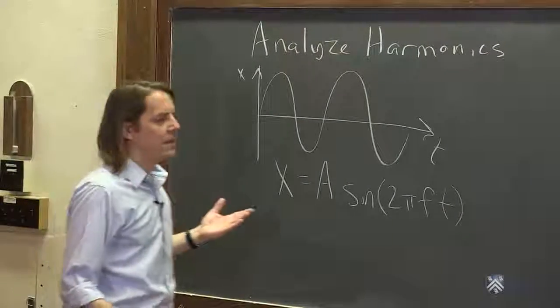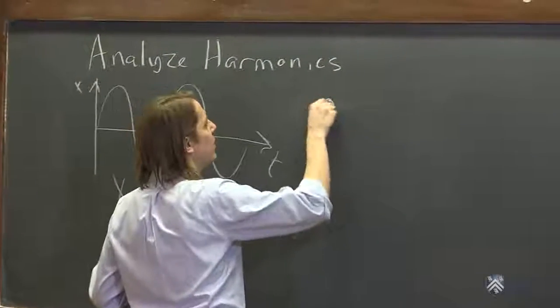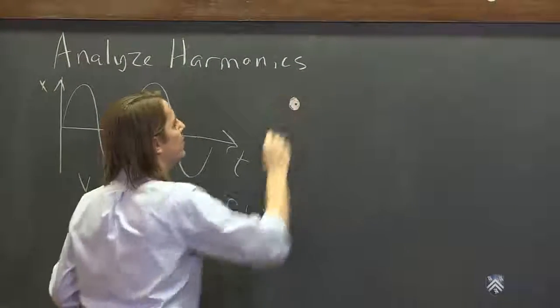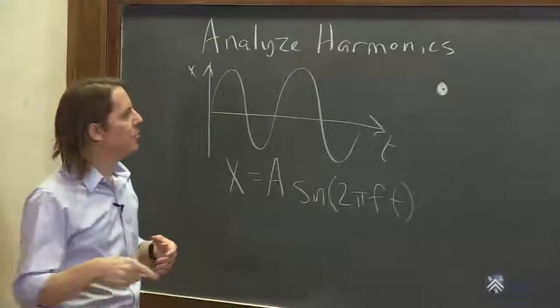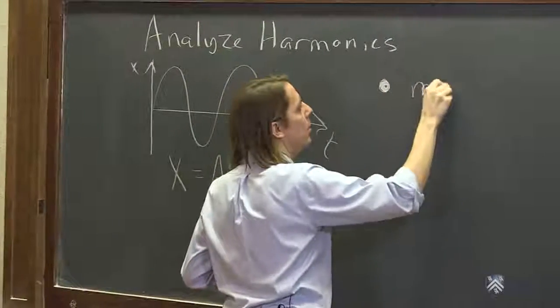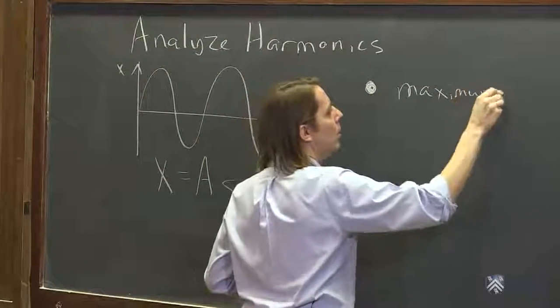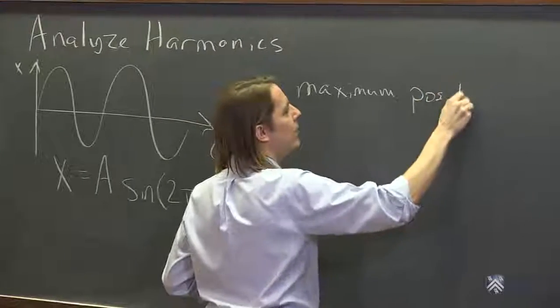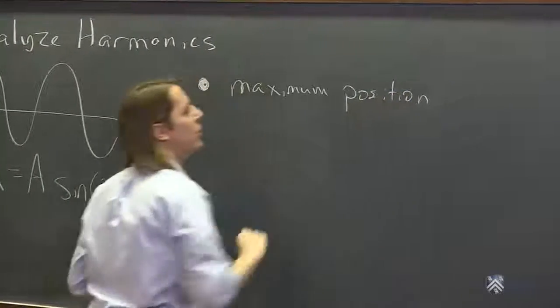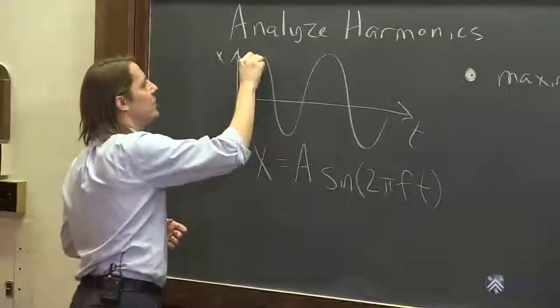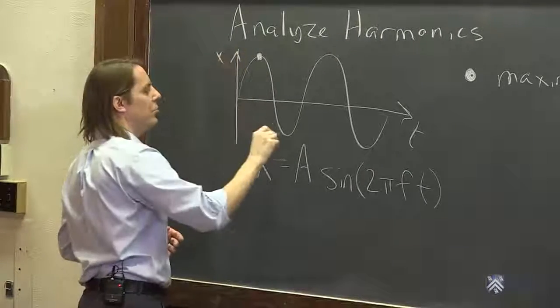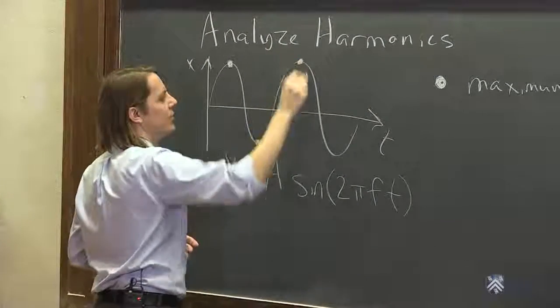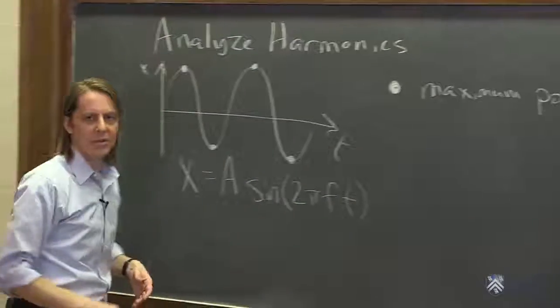So we can look at it and ask ourselves a few things. We could say let's put a circle on the maximum position. So everywhere that it goes to this largest position is basically the peaks of the sinusoid. But here it's at plus A, here it's at minus A, plus A, minus A.